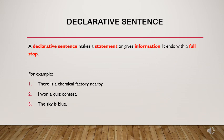The first, declarative sentence, is a sentence which makes a statement or gives some information, and it always ends with a full stop. See the examples: First, 'There is a chemical factory nearby' — we know there is some factory nearby and the detail added is 'chemical.' Second, 'I won a quiz contest' — 'I' is the subject who won a quiz contest. Third, 'The sky is blue.' All these sentences end with a full stop.